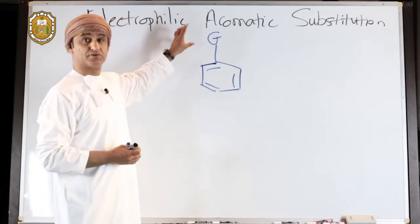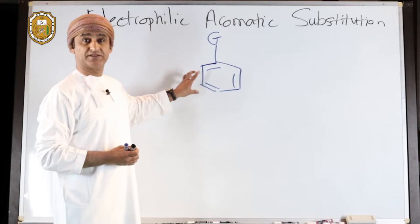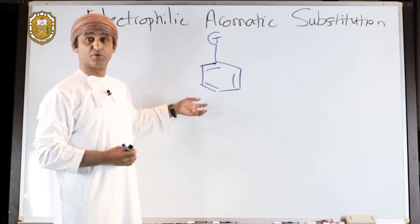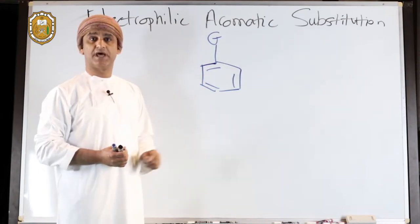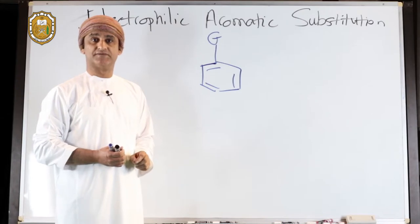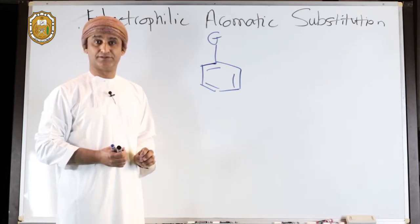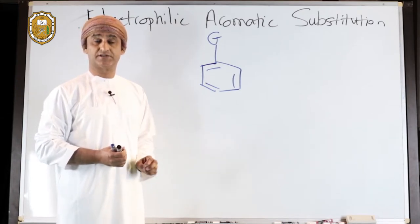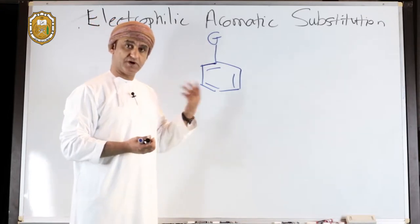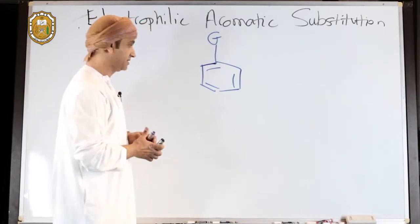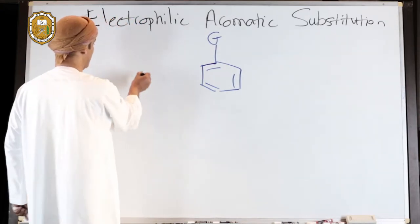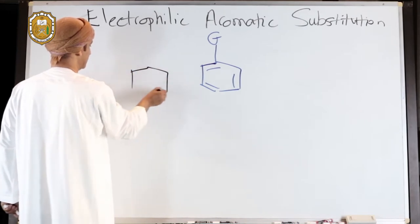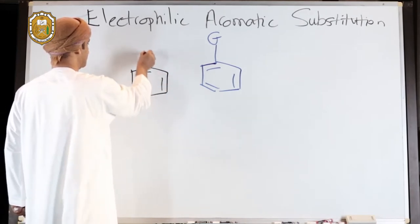Would that group donate electrons to the benzene ring, increasing its electron density, or would it withdraw? Well, that will depend on the group itself. Some groups are electron-donating groups, and some groups are electron-withdrawing groups. Let's draw a general representation for benzene rings with electron-donating groups.